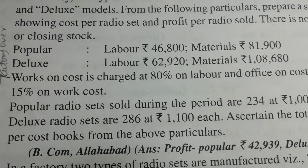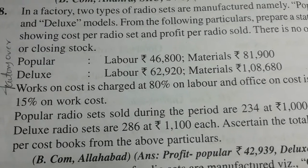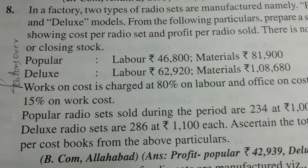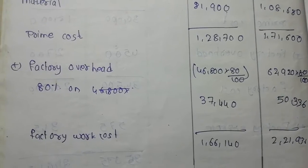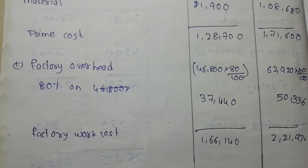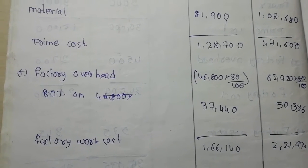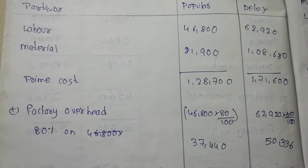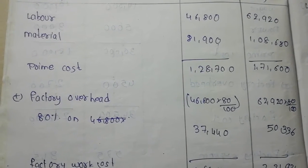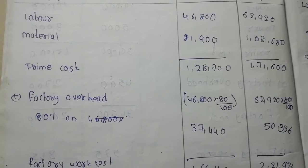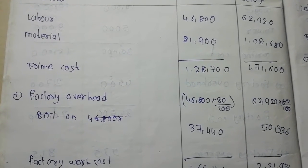Work cost is charged at 80% on labor. For the popular model, labor is 46,800, and 80% of that gives work cost of 37,440.